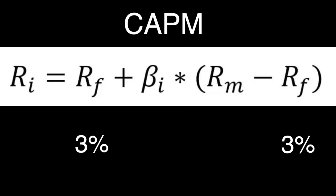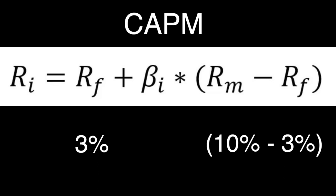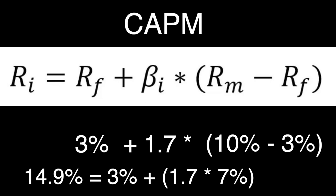The CAPM formula states: expected return of the investment equals the risk-free rate plus beta times the market premium, where the market premium is the expected return of the overall stock market minus the risk-free rate. For example, with a risk-free rate of 3%, an expected market return of 10%, and a beta of 1.7, working through the math gives an expected return of 14.9%. Since this is a high-beta stock, it has a higher expected return — but the trade-off is that it's riskier and would likely fall much more than the market if it crashes.